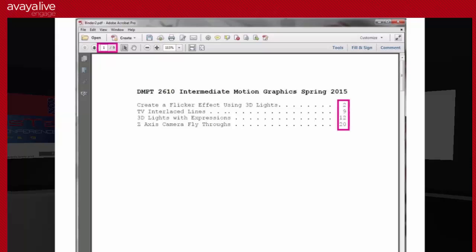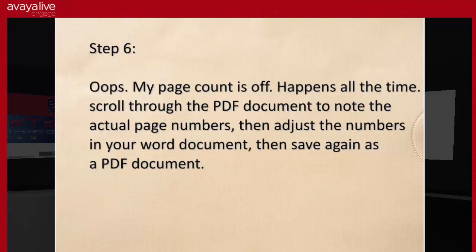When done, it will create and open a PDF document. At this point you may want to go ahead and save it. But all your documents will be in one place. Scroll through the document and compare your estimated page numbers to the actual page numbers. In my example I have a page count of 20 in my table of contents, but when I combine them I actually only have nine pages. This happens all the time — usually it's off by one or two pages. So go back into your Word document with your table of contents, scroll through the combined PDF, and adjust your page numbers accordingly.